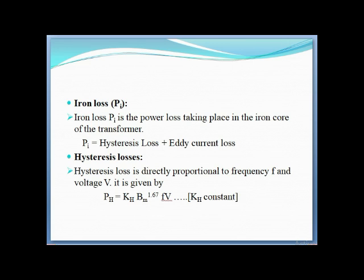Iron losses: PI is the power loss taking place in the iron core of the transformer. The hysteresis loss is directly proportional to the frequency F and voltage V, and it is given by pH (hysteresis loss) = KH × BM^1.67 × F × V, where KH is a constant.